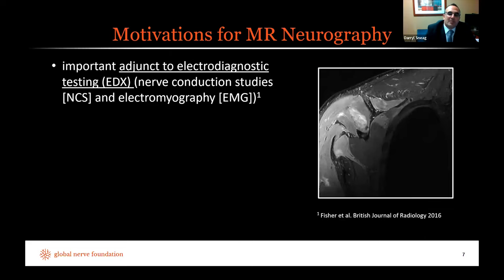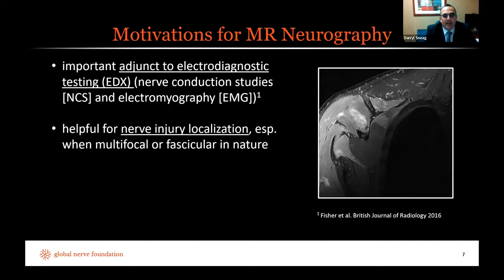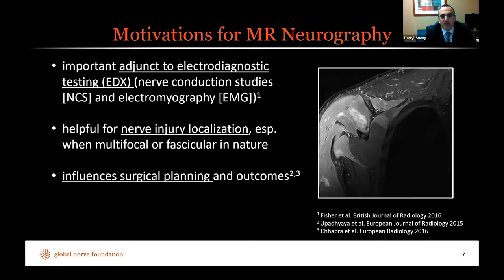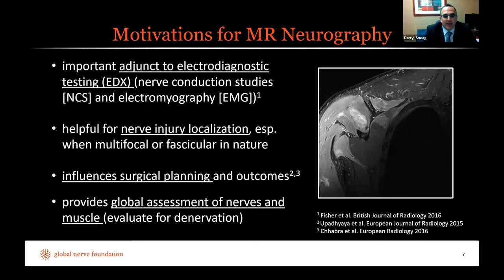What are the general motivations for performing MR neurography? First, it serves as an important adjunct to electrodiagnostic testing. It's specifically helpful for nerve injury localization, especially when the injury may be multifocal or fascicular in nature, which can be challenging to precisely localize with electrodiagnostic tests alone. It's been shown to influence surgical planning and outcomes, and lastly, it provides a global assessment of both nerves and muscle — rather than testing each muscle individually as with EMG, we can evaluate many muscles within a single acquisition.